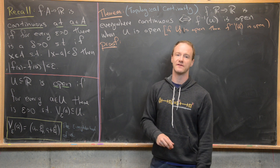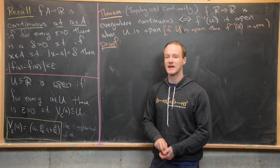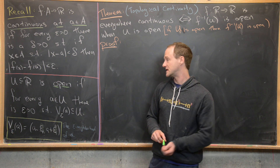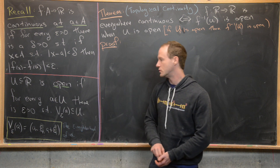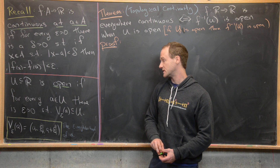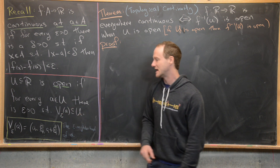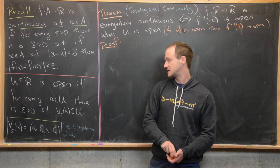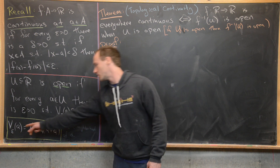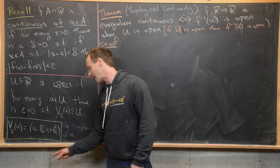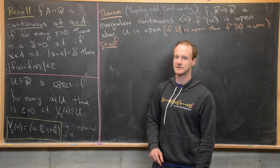Next I want to recall the definition of an open set. A subset U of the real numbers is said to be open if for every a in U there is an epsilon greater than zero such that the epsilon neighborhood centered at a is completely contained in U. The epsilon neighborhood centered at a is really just the open interval from a minus epsilon to a plus epsilon.